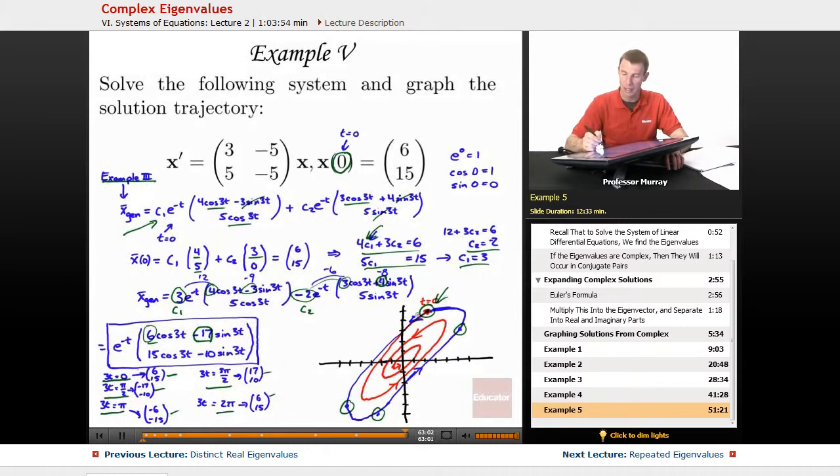I drew my first blue ellipse, which is what the solution would look like if there were no e to the negative t there. But since there is an e to the negative t there, I know that that ellipse is actually getting smaller and smaller as it travels around. So it's not a true ellipse.